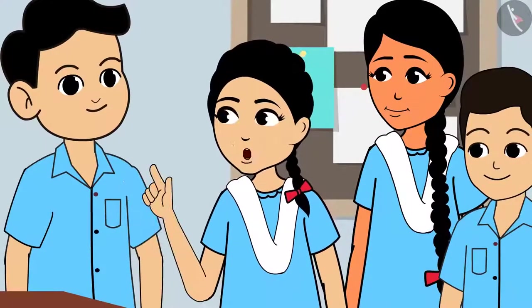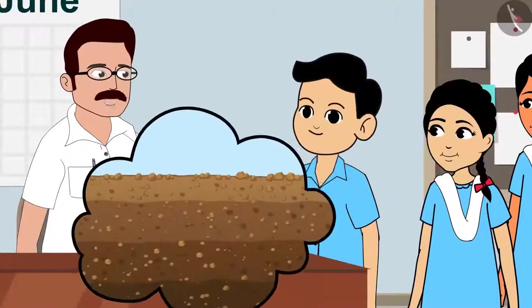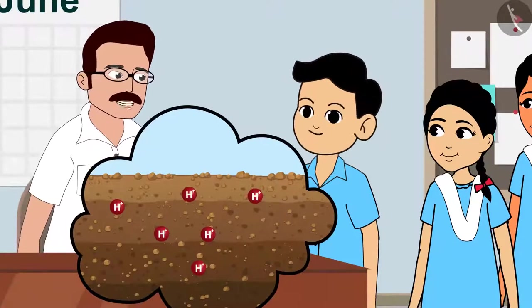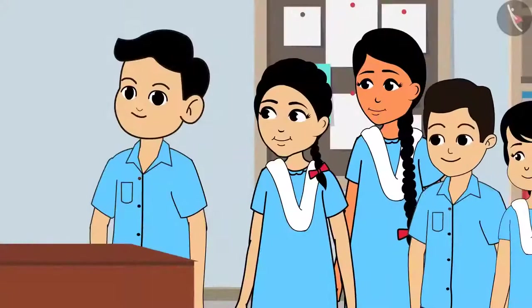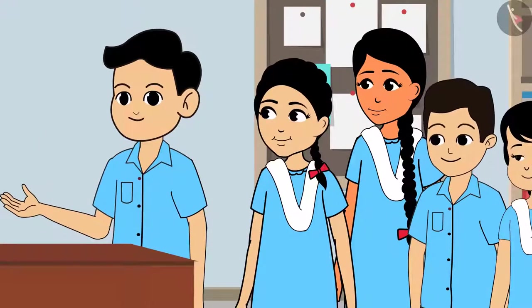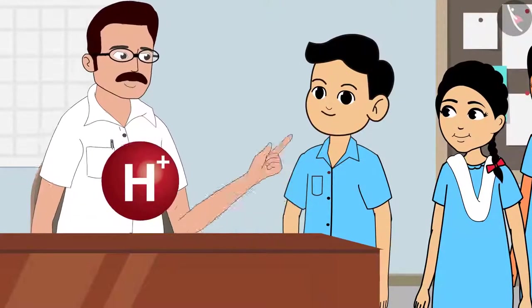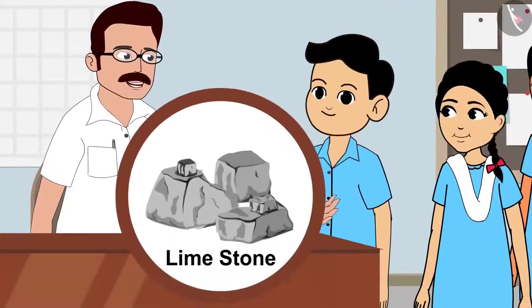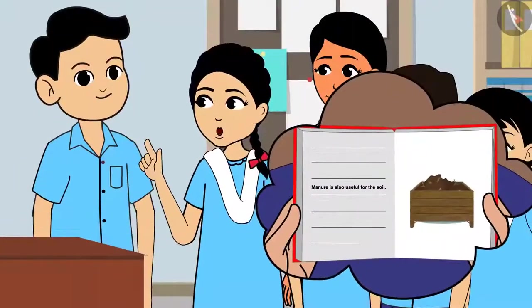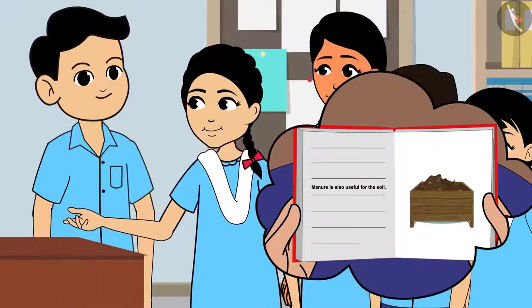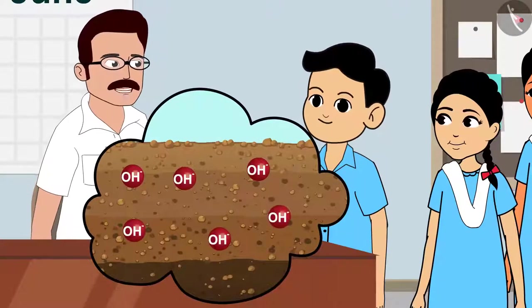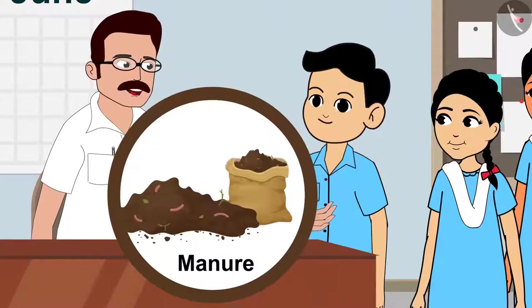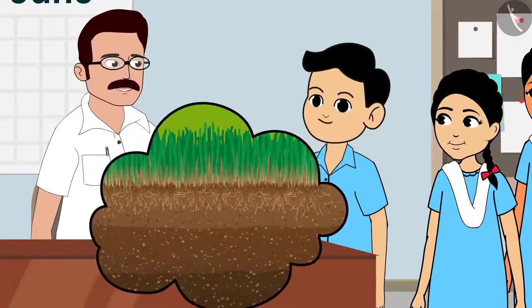Sir, where else does neutralization help? Sometimes, due to the increase in hydrogen ions in soil, the acidic content of the soil increases — this happens when fertilizer is used in large quantities. Will it affect crop production? Yes. The soil should not be too acidic or too basic. When the soil is acidic, lime is used to reduce it. When the soil becomes alkaline, manure is used — the organisms in the soil make it acidic again, which makes the soil good for crops.